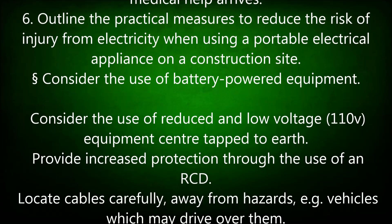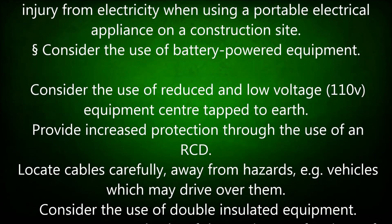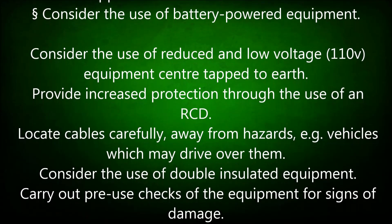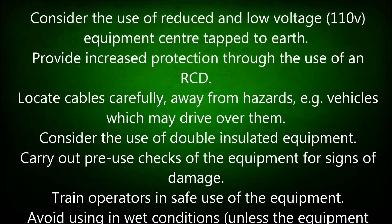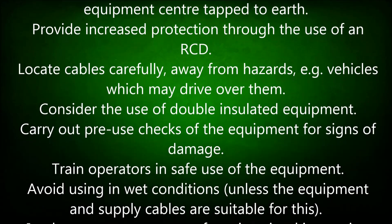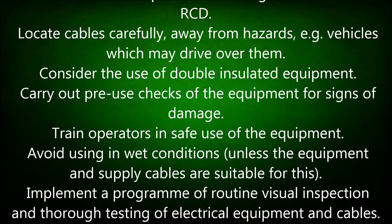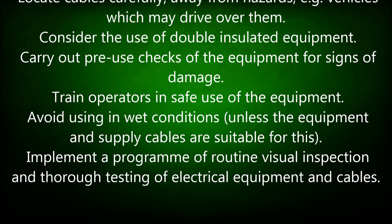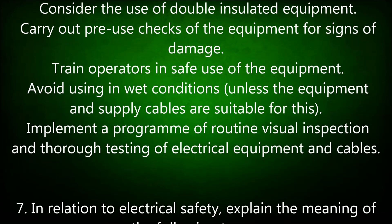Question 6: Outline the practical measures to reduce the risk of injury from electricity when using a portable electrical appliance on a construction site. Consider the use of battery-powered equipment. Consider the use of reduced and low-voltage equipment, centre-tapped to earth. Provide increased protection through the use of an RCD. Locate cables carefully, away from hazards — for example, vehicles which may drive over them. Consider the use of double-insulated equipment.